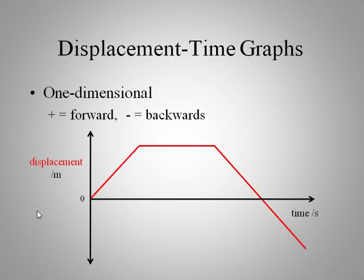Here's an example of a displacement-time graph. The object is moving away from the origin at some constant velocity, then it stays at the same place — it's at rest for a while. Then it heads back towards the origin and returns to where it started, and then it actually ends up behind where it started, with some negative displacement.